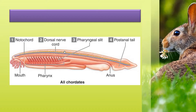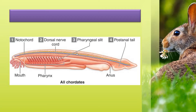Above the notochord, the nerve cord is present. This nerve cord will become the spinal cord in higher vertebrates. The second feature is the dorsal nerve cord, which lies above the notochord and serves to integrate and coordinate all body functions, representing the nervous system. In higher chordates, the anterior end of the nerve cord gets enlarged and forms the brain, and the posterior end becomes the spinal cord, protected inside the vertebral column.